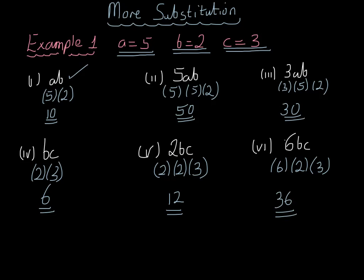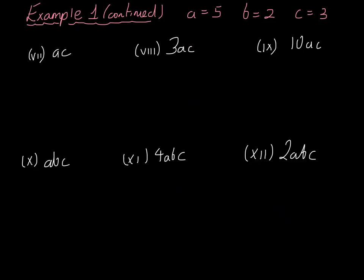Let's keep going now. We want to work out ac. A is 5 and c is 3. So this would be equal to 5 inside brackets, 3 inside brackets, which is 5 times 3, which is equal to 15.